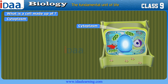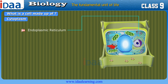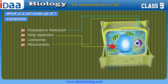Special components of the cells are called cell organelles. Examples include: endoplasmic reticulum, Golgi apparatus, lysosomes, mitochondria, plastids, and vacuoles.